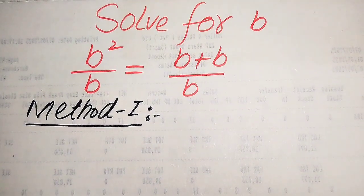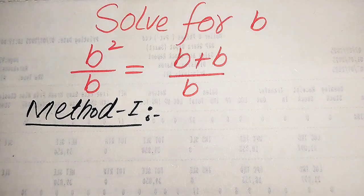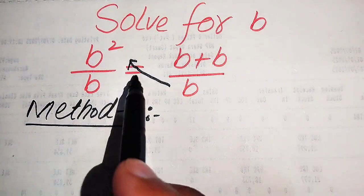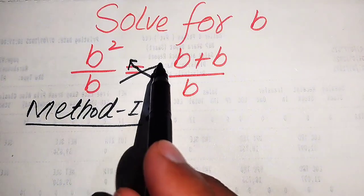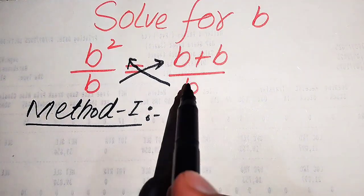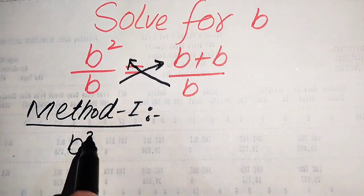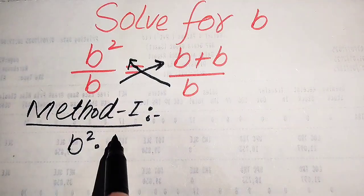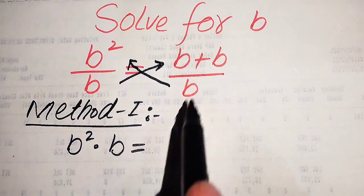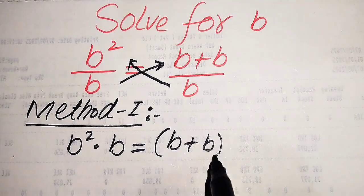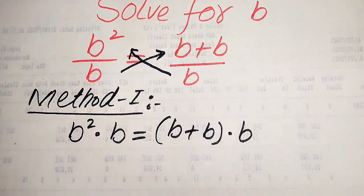In the first method, we just need to cross multiply the terms. We multiply this b on b squared and we multiply this b with these two values. So when we multiply b with b squared, it is written as b squared multiplied by b equals b plus b, multiplied by b.